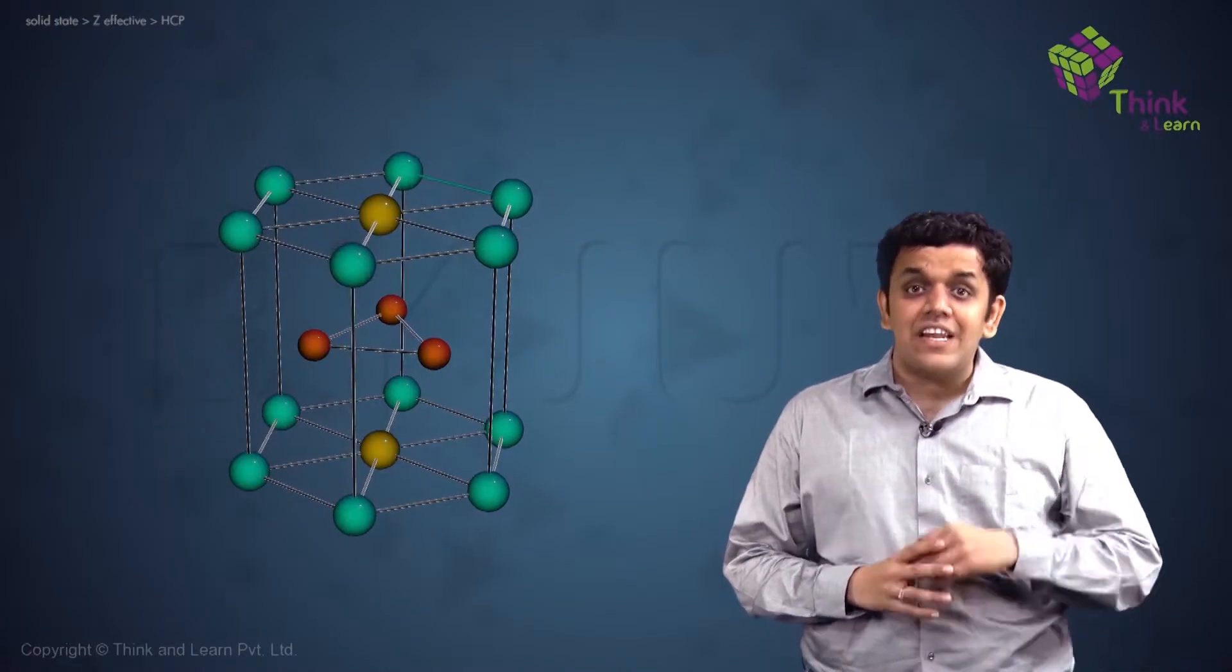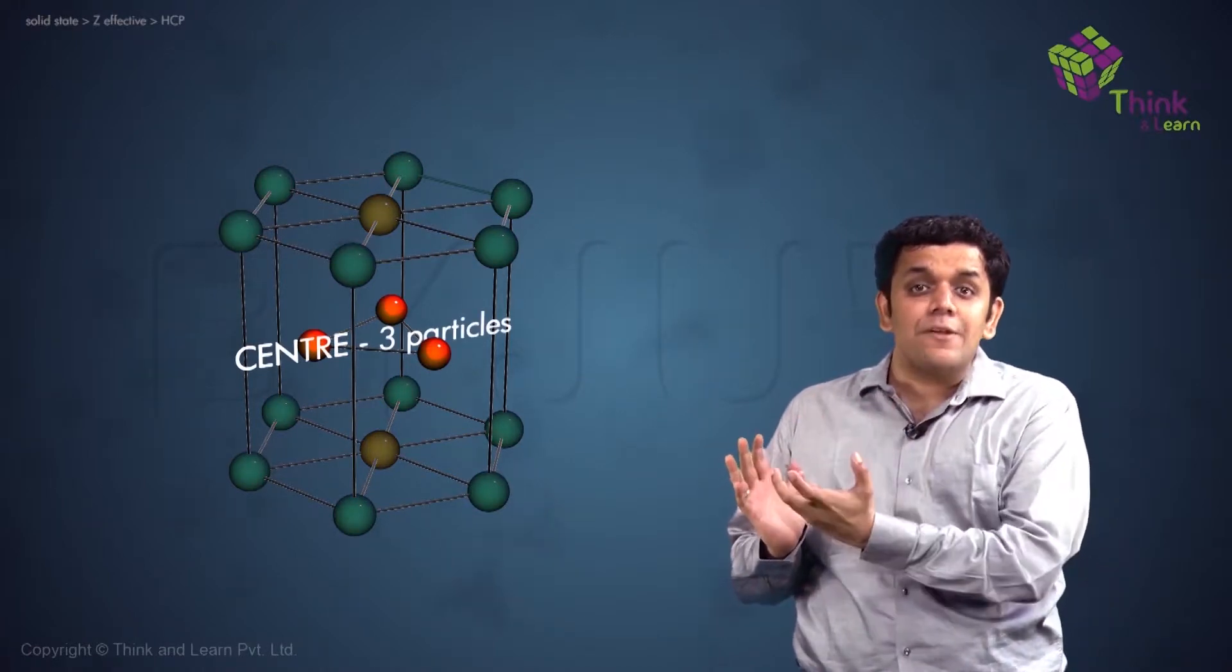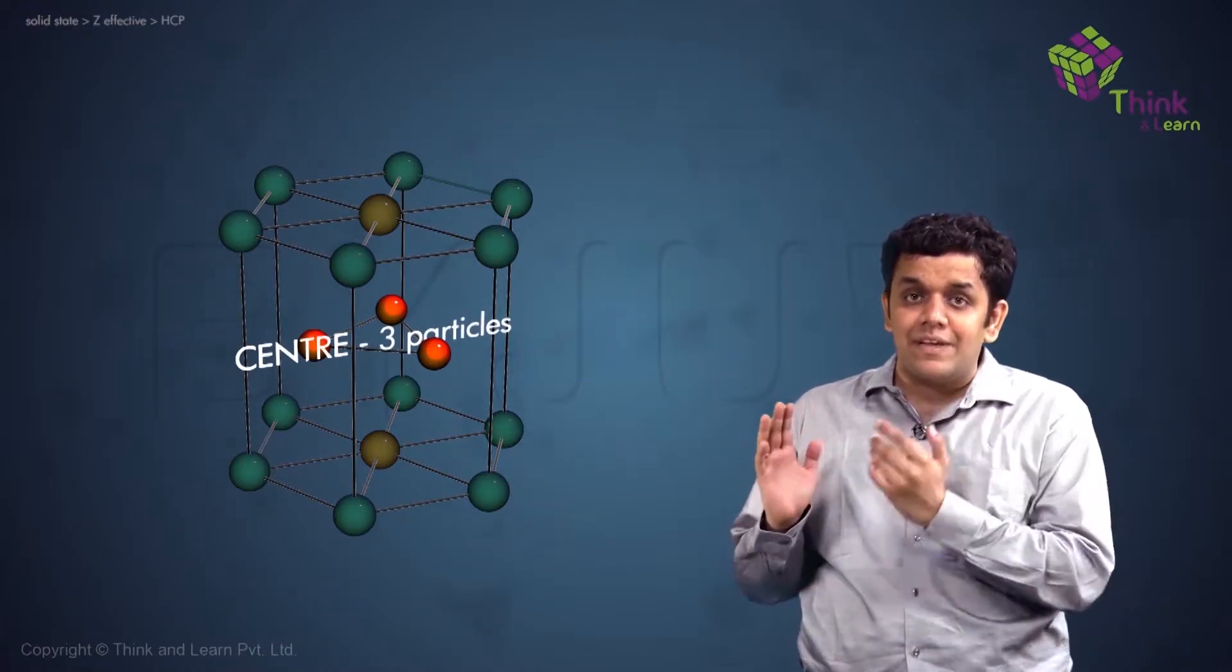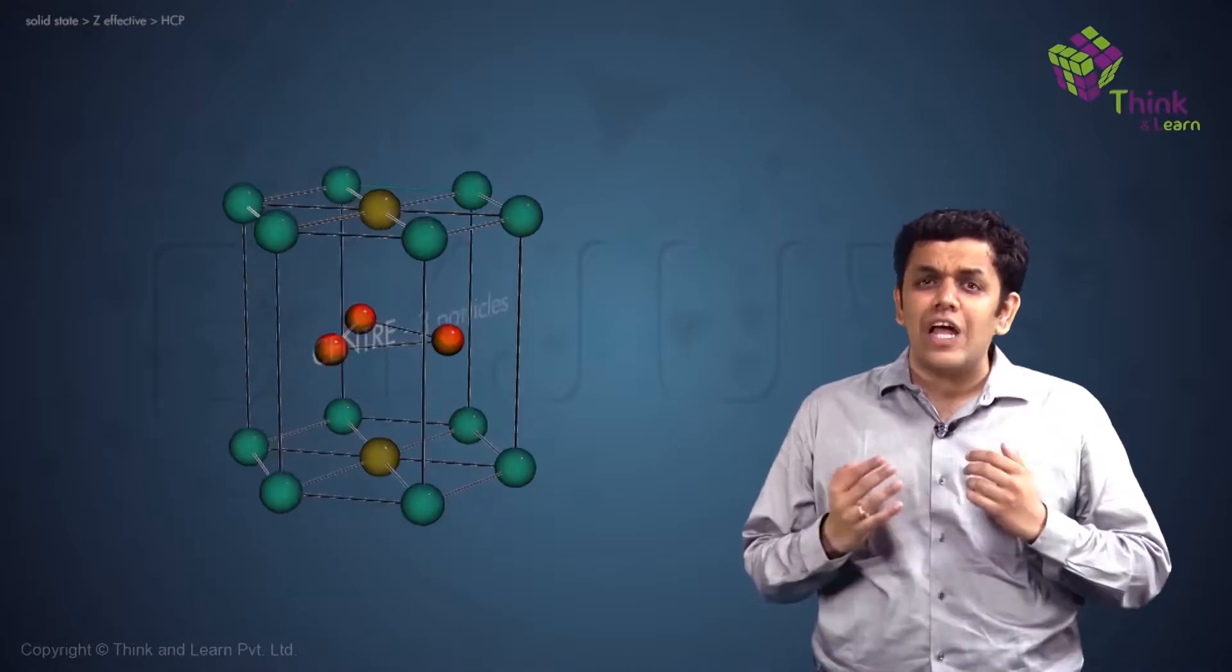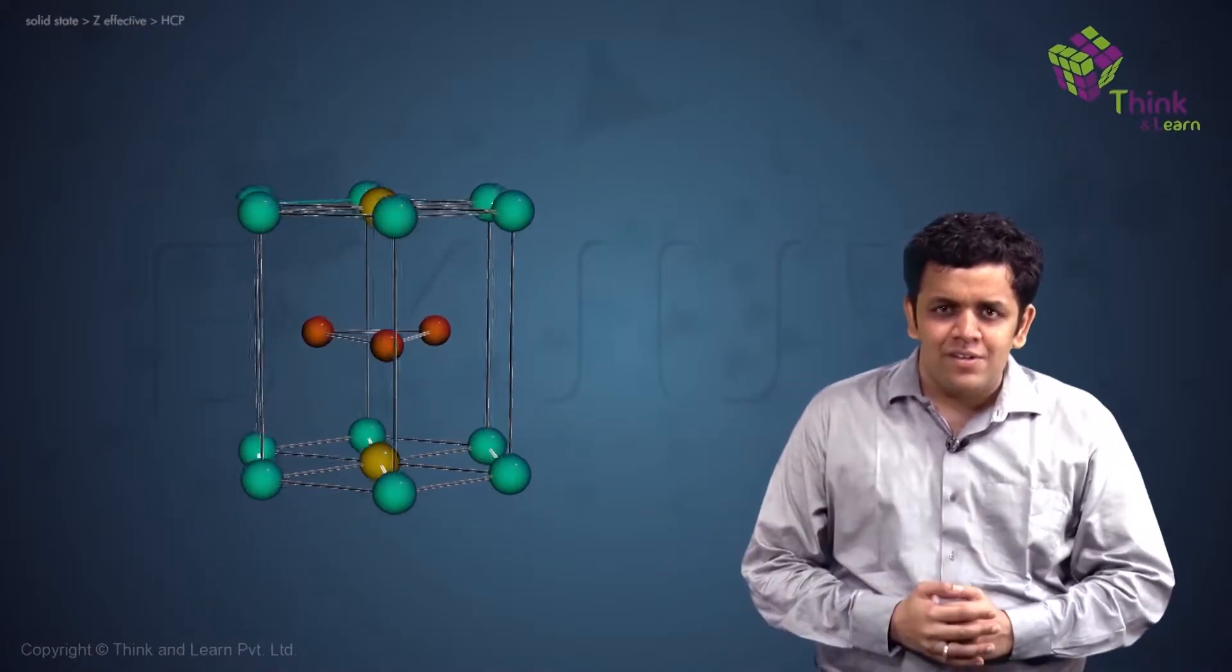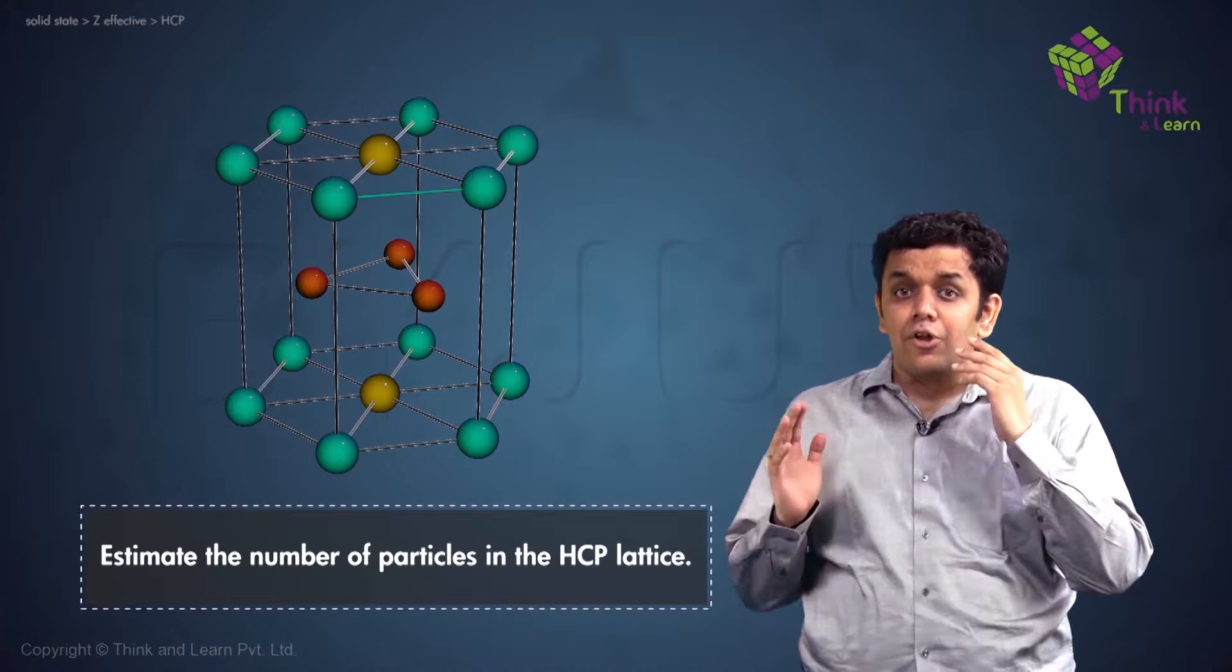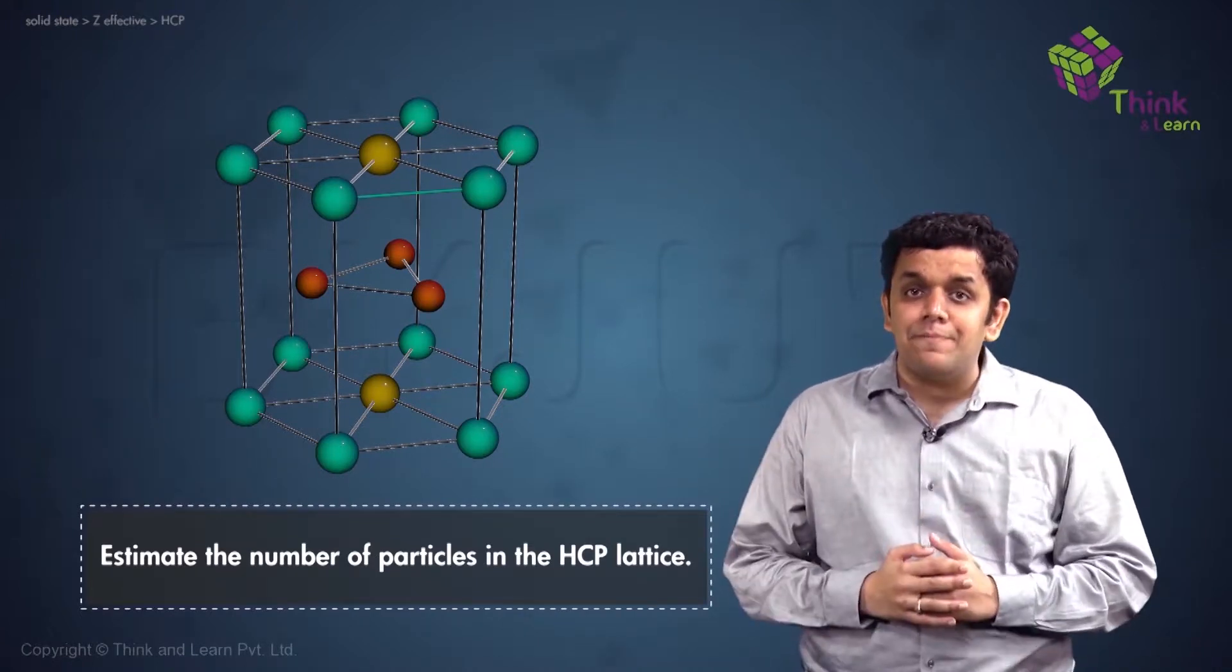Lastly, there are three particles occupying the middle or the center portion of the hexagon. Something like this. So now guys, I want you to take a shot regarding the number of particles in this HCP lattice.